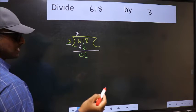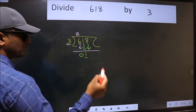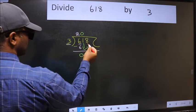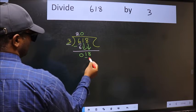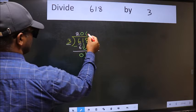So we should bring down the second number. And the rule to bring down the second number is we should put 0 here. Then only we can bring this number down. Now we have 18. When do we get 18 in the 3 table? 3 times 6 is 18.